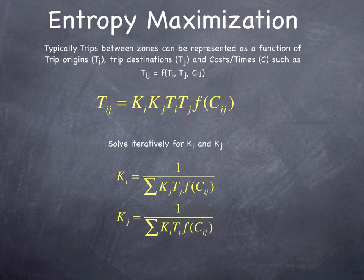The solution technique is described in the equations on this slide. The number of trips from an origin to destination depends on the trip origins, trip destinations, and the cost of travel between them. Two balancing coefficients, k sub i and k sub j, need to be estimated.